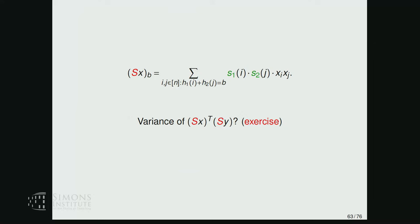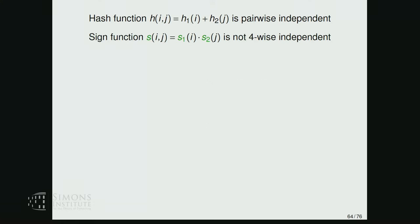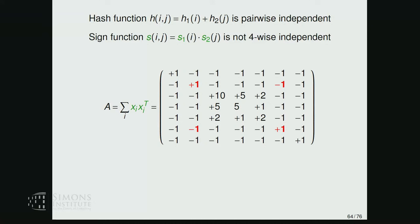An interesting exercise: compute the variance for the tensor sketch, analogously to what we did for count sketch. The result is that the signs from the tensored construction are not four-wise independent. For example, take four points at the corners of a rectangle: the product of sign functions is identically one, despite having four distinct points. In expectation you get one rather than zero, so the standard analysis does not go through.